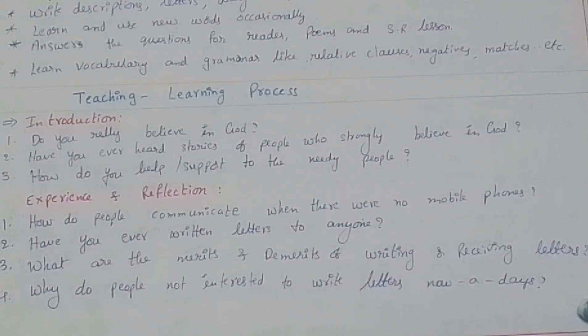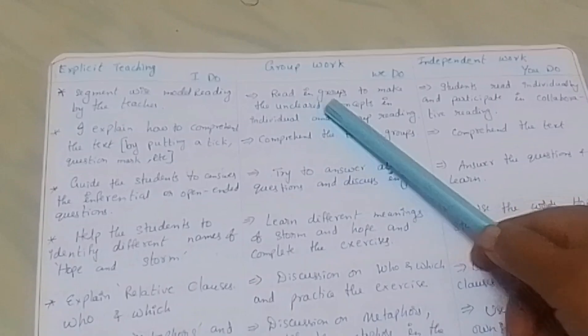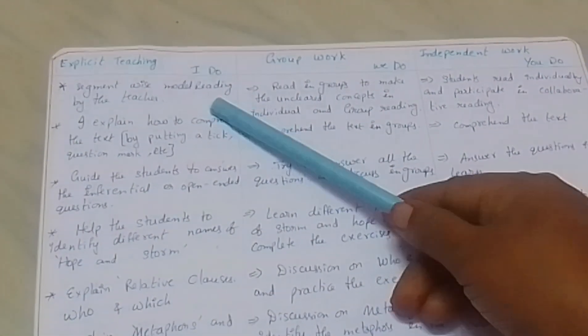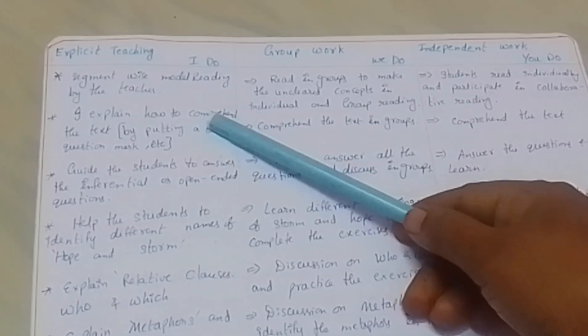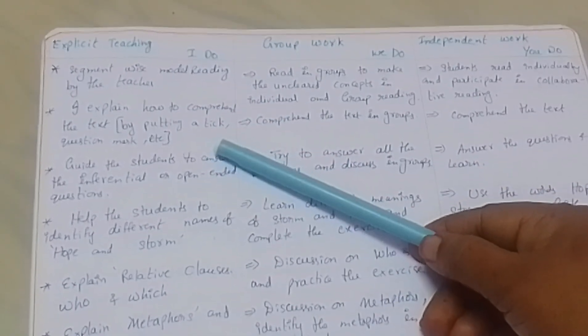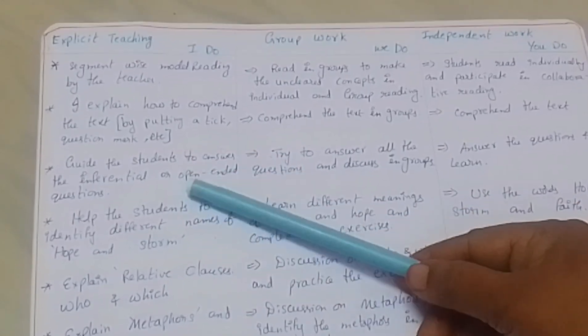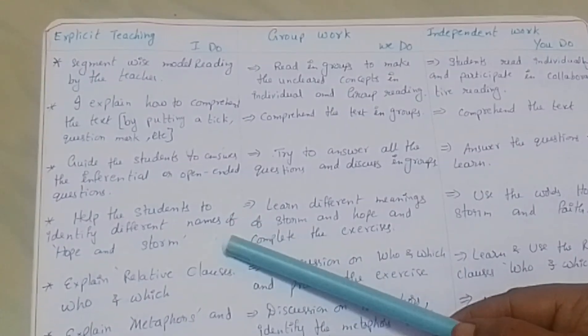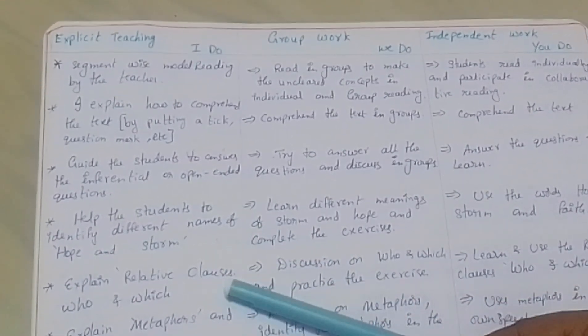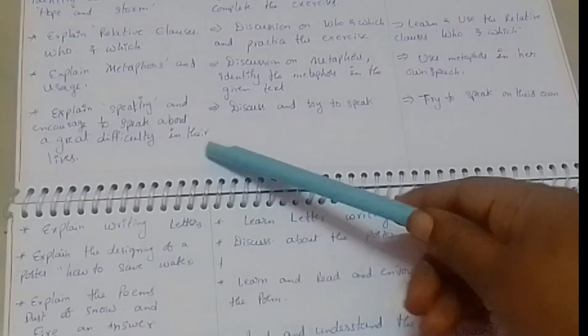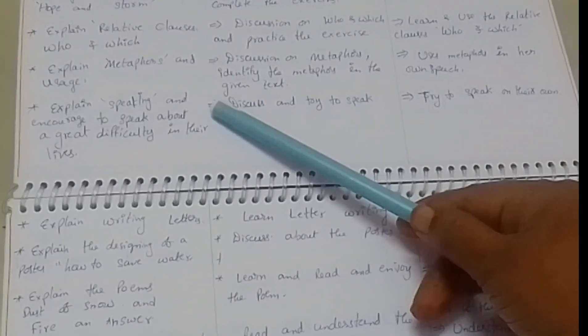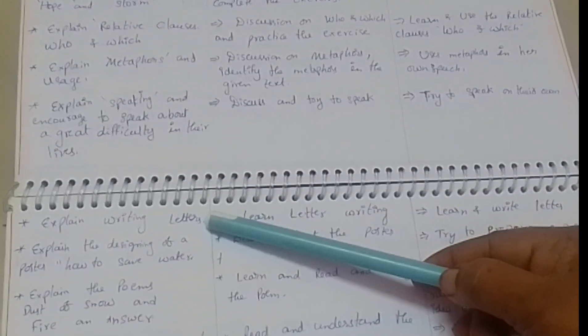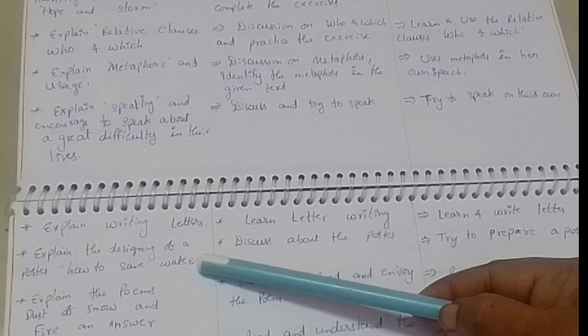Explicit teaching - I do, group work - we do, independent work - you do. Segment-wise model reading by the teacher. I explain how to comprehend the text by putting a tick mark, question mark, etc. Guide the students to answer the inferential or open-ended questions. Help the students to identify different names of hope and storm. Explain relative clauses - who, which. Explain metaphors and usage. Explain speaking and encourage to speak about great difficulty in their lives. Explain writing letters. Explain the designing of a poster - how to save water. Explain the poems Dust of Snow and Fire and Ice. Explain about A Triumph of Surgery.